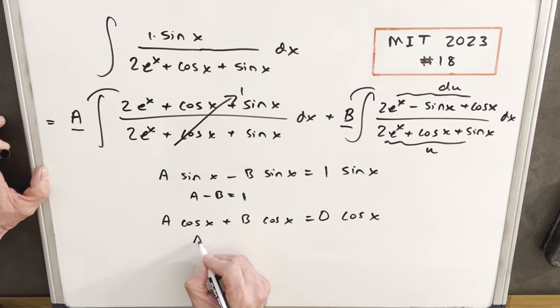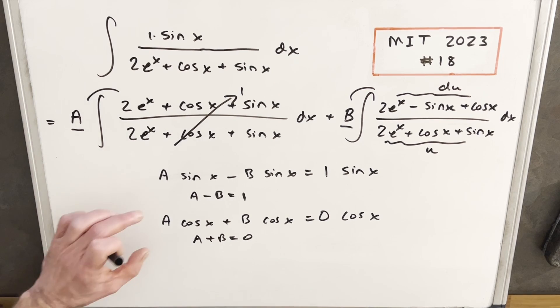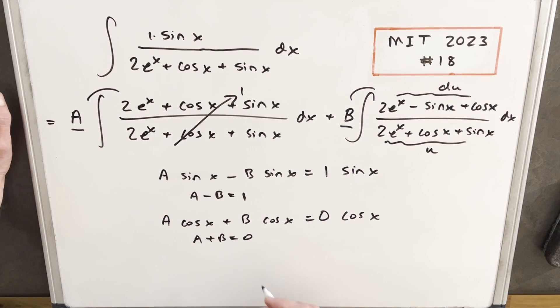Okay, so we create an equation for this, where a plus b equals 0. But this gives us two equations and two unknowns, and we can do that.